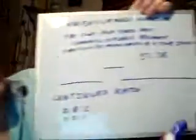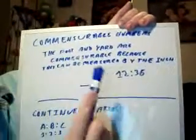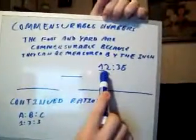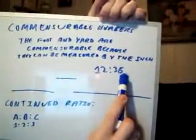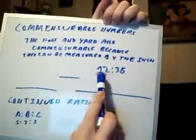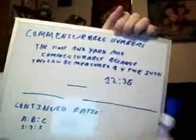Now the same thing applies to the foot and the yard. You can have a ratio of twelve to thirty-six. This ratio of twelve to thirty-six is commensurable because of the one inch unit. There are twelve inches in a foot and there are thirty-six inches in a yard. So one inch can measure the twelve inch foot and the same one inch can measure the thirty-six inch yard.